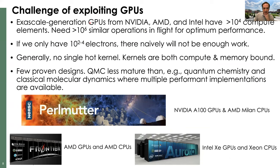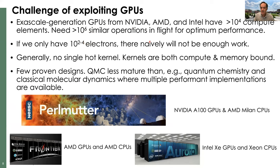This brings me to the challenge of exploiting GPUs. We want to run on NVIDIA, AMD, Intel, and future yet-to-be-invented accelerators. Current generation GPUs have something like 10,000 compute elements — streaming multiprocessors — and each needs some number of operations in flight to run efficiently, perhaps 100. So we might need about a million similar operations in flight for optimum performance. If we only have 100 electrons — or even 10,000 on a large system — that naively isn't enough work to saturate the GPU.